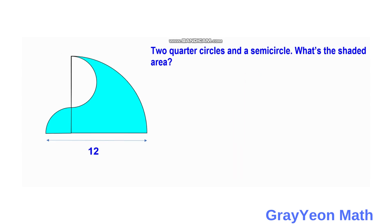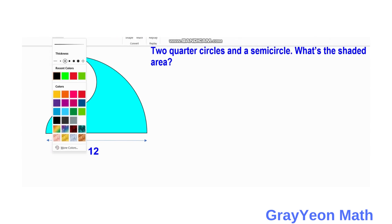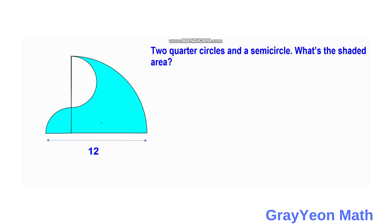First, we need to label the parts of this figure. We label the radius of the bigger quarter circle as capital R and the smaller quarter circle as lowercase r. The radius of the semicircle would then be (R minus r) over 2.